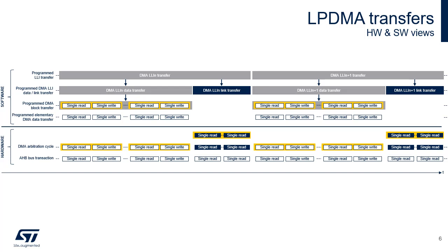An LLI transfer can include a data transfer and a link transfer. The LPDMA supports a single transfer operation mode, the direct mode. A data transfer is a single data read immediately followed by a single data write, because the LPDMA does not support FIFOs. Each single read followed by a write data transfer requires an arbitration cycle before being transferred over the AHB master port.